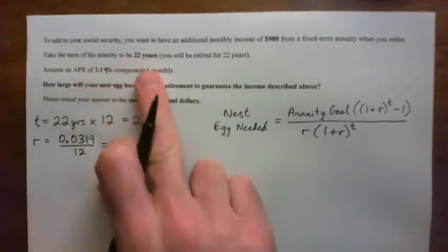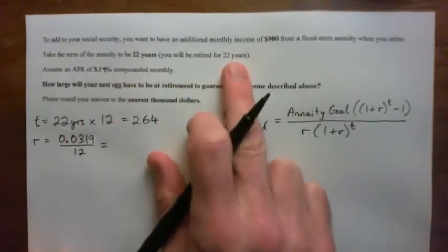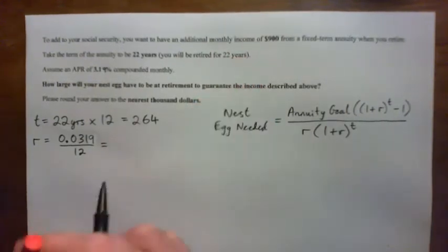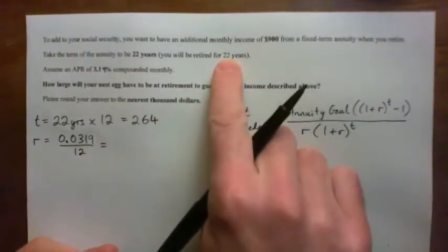Take the term to be 22 years, so you'll be retired for 22 years, and my little joke of course on these things is well you better hope you die because you're not going to have any money after that 22 years.